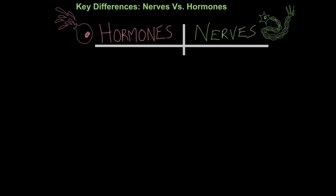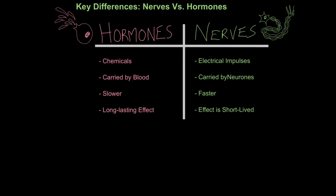So now we're going to look at the key differences between nervous and hormonal communication. So firstly, we know that hormones are chemicals and nerves are electrical impulses. Hormones are transported by the blood, whereas electrical impulses use neurons to get around the body. Because our blood travels slower than electricity, hormones travel slower than nervous messages or electrical impulses. But the effect a hormone has on the body will last longer. Finally, the action of hormones is much more general.